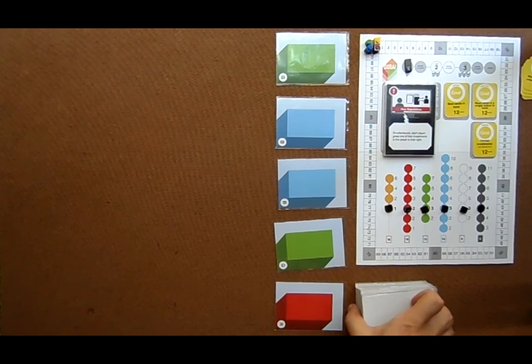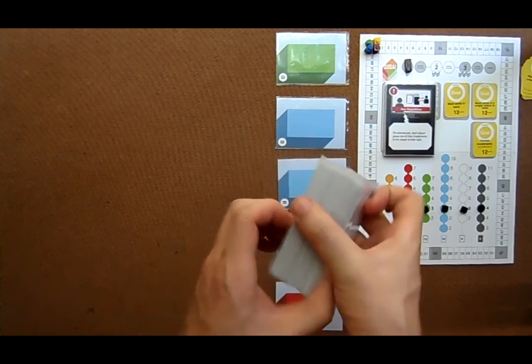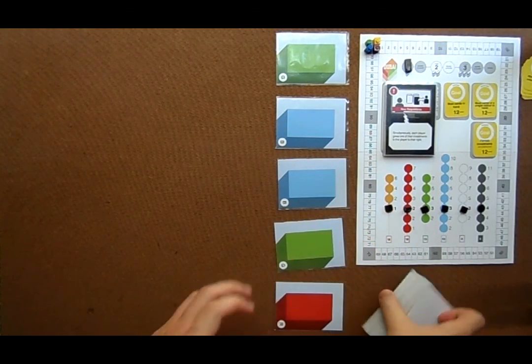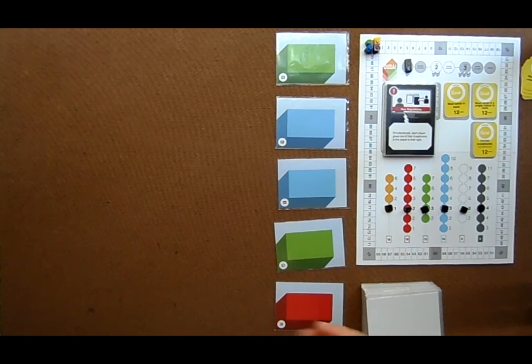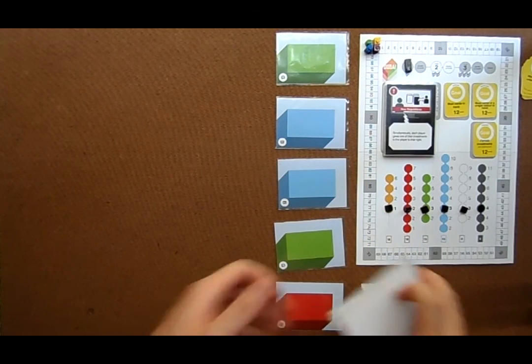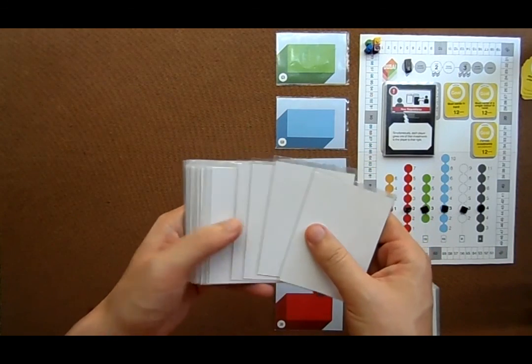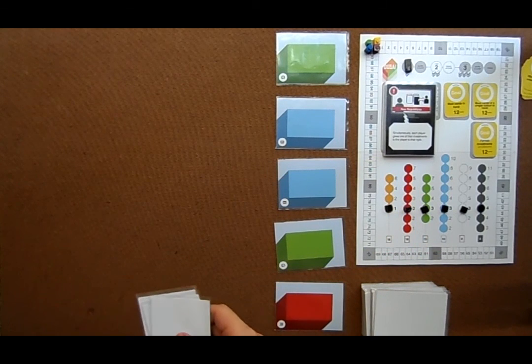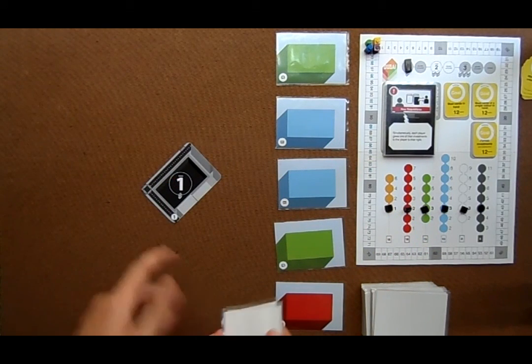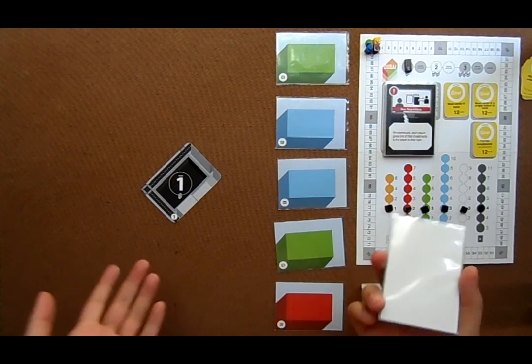We then take the company deck, shuffle everything, which I've already done, and then deal out five to the market face up. And then every player gets four cards from the top of the company deck. And we lay out one foundation card, phase one, and we're ready to go.